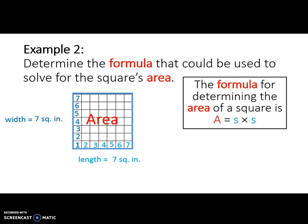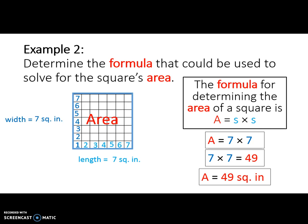The formula for determining the area of a square is A is equal to s times s, or area is equal to side times side. To solve for the area, I will multiply seven times seven. Seven square inches times seven square inches is equal to forty-nine square inches, so A is equal to forty-nine square inches, which means that the area of this square is forty-nine square inches.